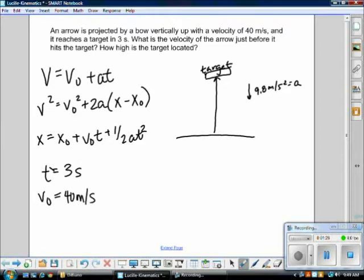Now, for the first part of the problem, the velocity of the arrow just before it hits the target, you have to find the velocity by using what you have. So, in this case, I used velocity equals v-naught plus acceleration times time.